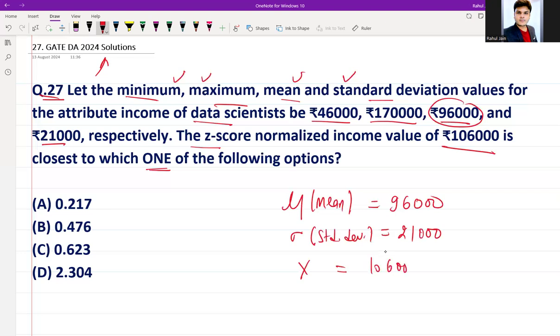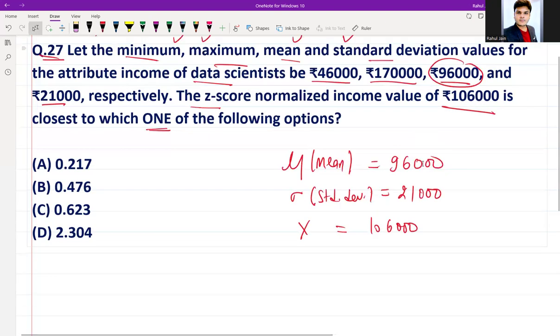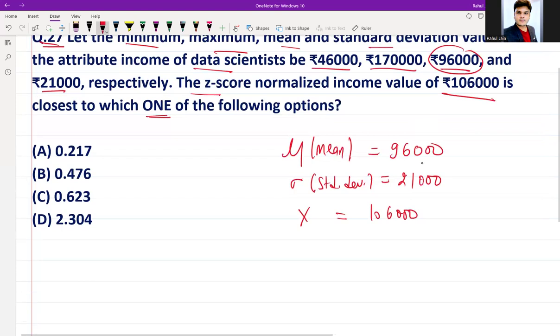We are having income X which is given as ₹1,06,000. The question is: the z-score normalized income value of ₹1,06,000 is closest to which one of the following. So what is the formula for z-score? Z-score equals X minus μ divided by σ.